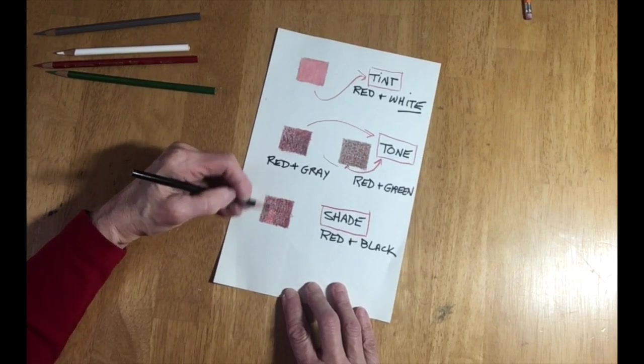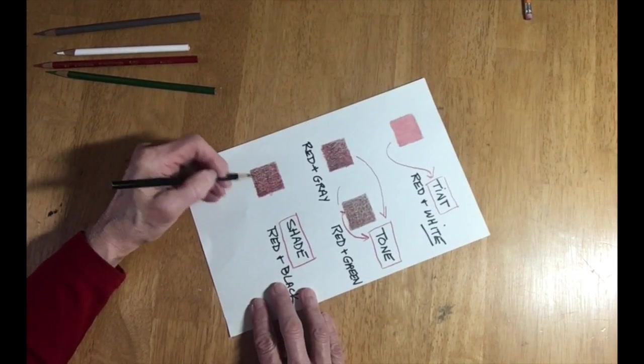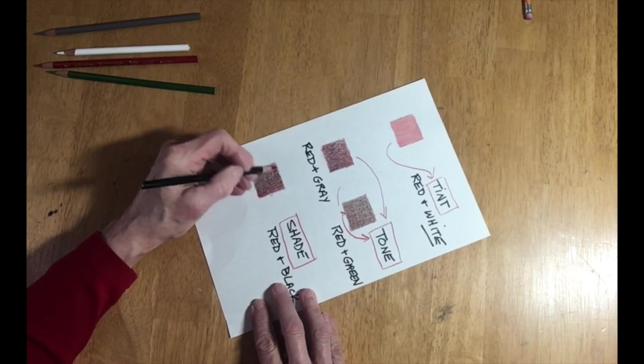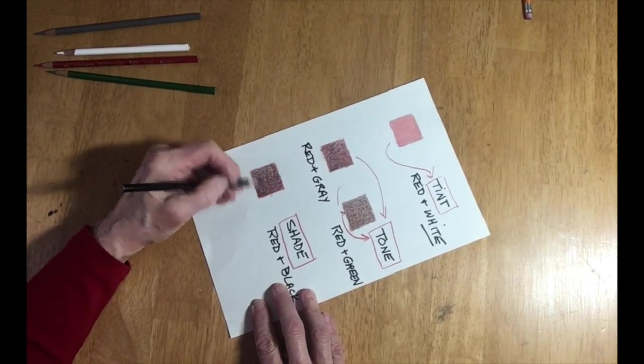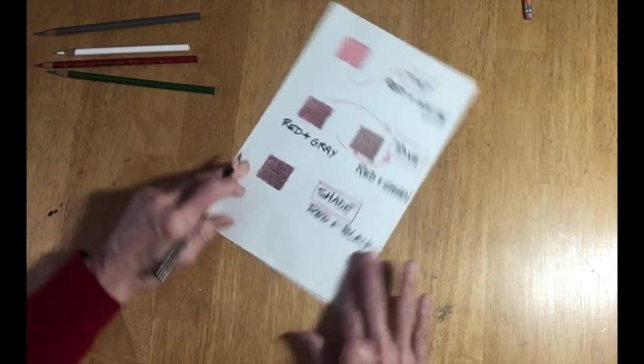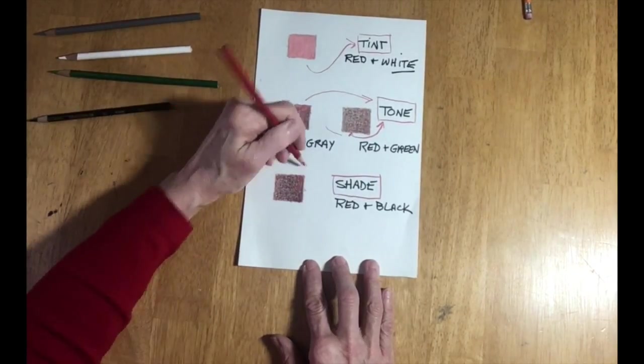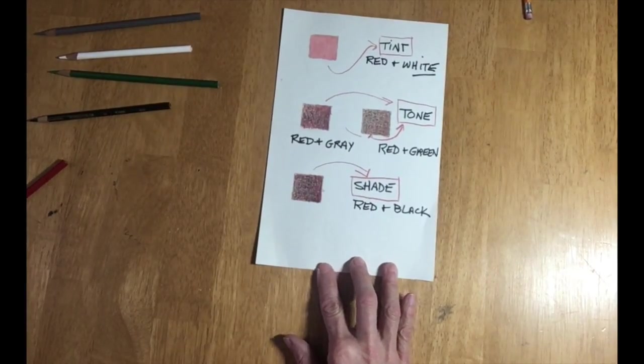But in this case I am just using the black but other colors could be used. I could be using a darker green. I could be using a blue. But if I used a blue and then I blended those colors there would be a little bit of a purplish tint to it.